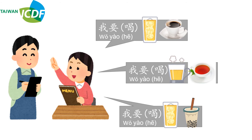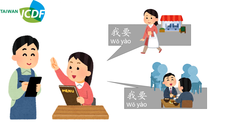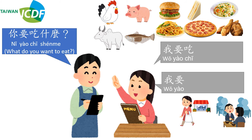Let's use the sentences with the words together: 我要喝冰咖啡, 我要喝热红茶, 我要喝冰珍珠奶茶. You will also hear: 外带 (takeout) and 内用 (dine-in) when ordering.